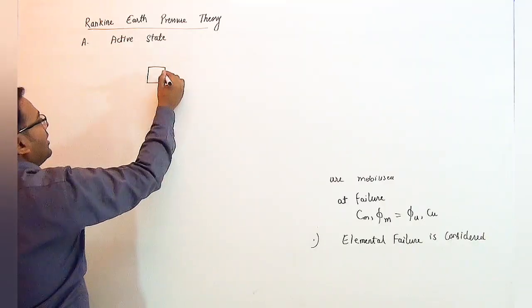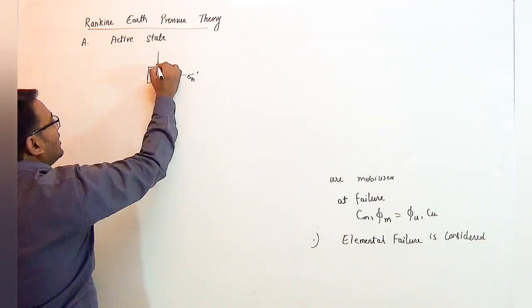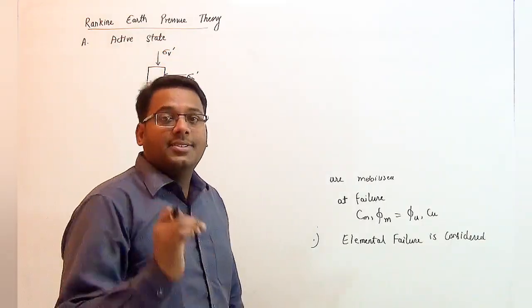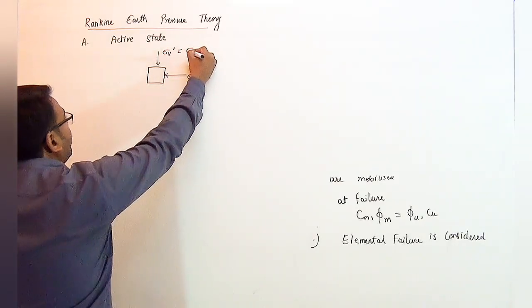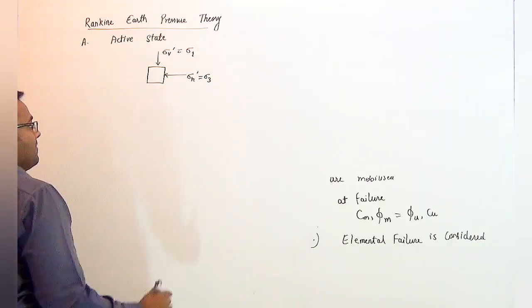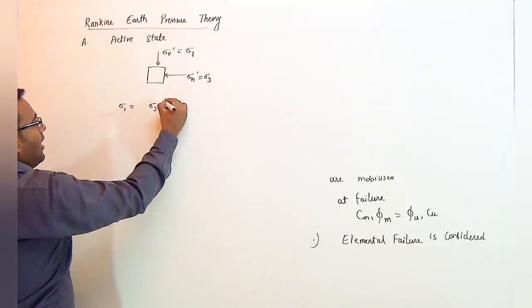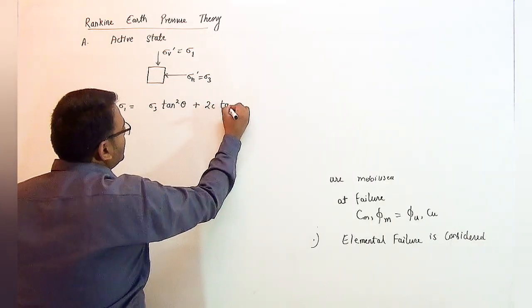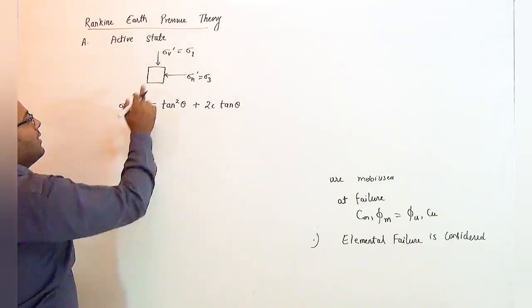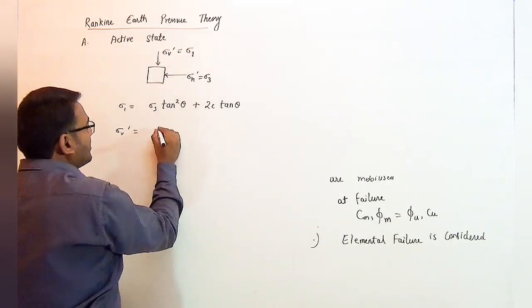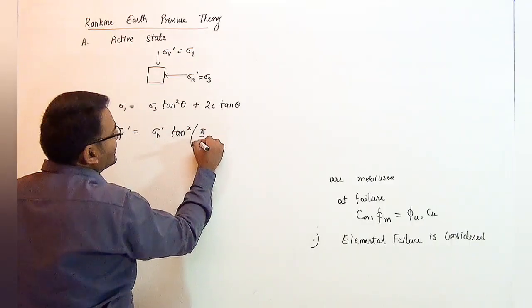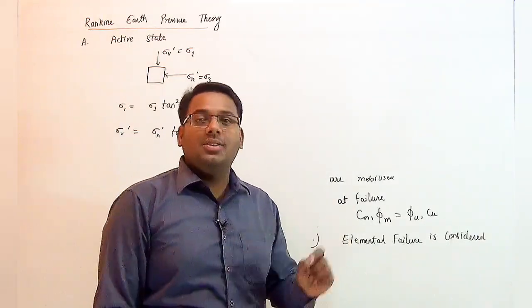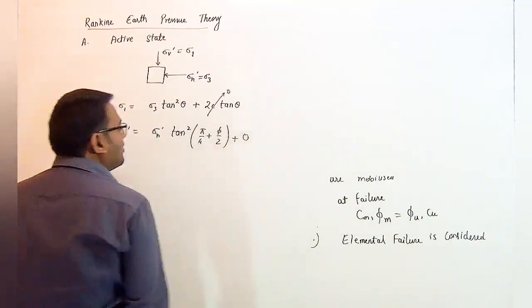This element will be subjected to stress in the horizontal direction as σh' and stress in the vertical direction as σv'. As the soil is in the active state, σv' will be the major principal stress whereas σh' will be the minor principal stress. Using the relation from the shear strength chapter: σ1 = σ3 · tan²θ + 2c·tanθ, we put σ1 = σv', σ3 = σh', and θ = (π/4 + φ/2). Since c = 0 for cohesionless soil, the second term becomes zero.